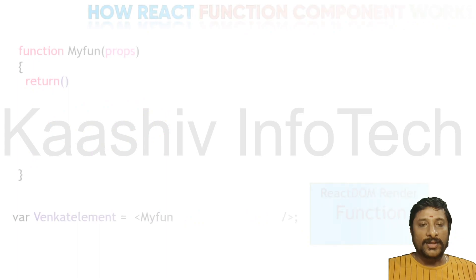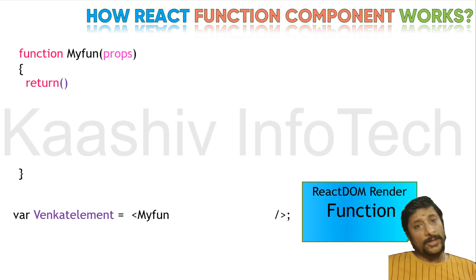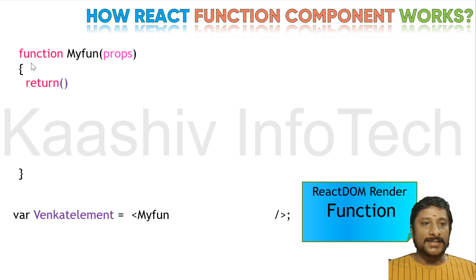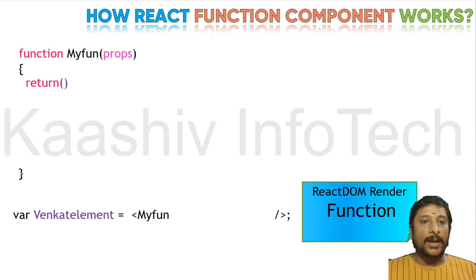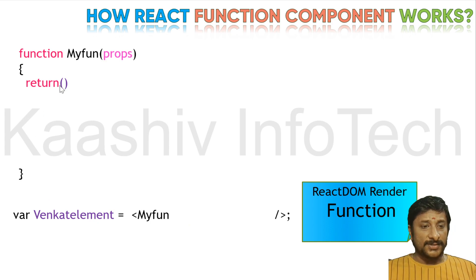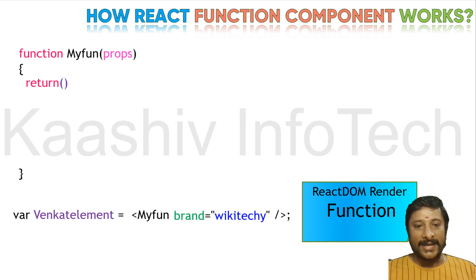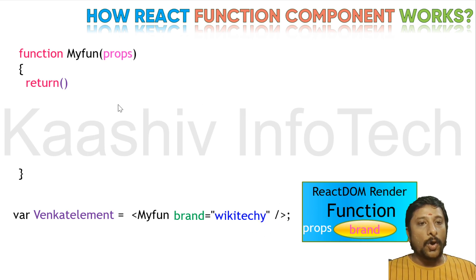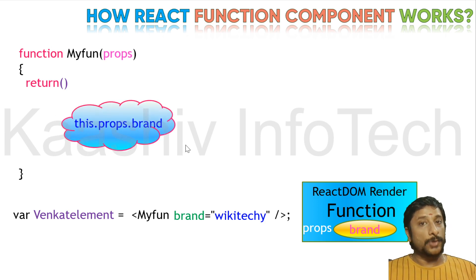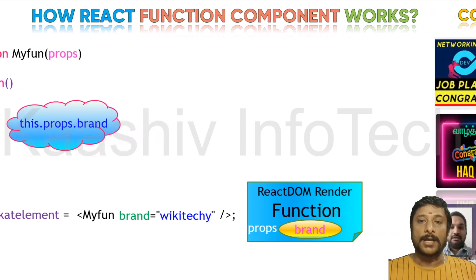You may ask: how about functions? In classes we need to render, but in functions we have a return statement. In the function, you pass props as a parameter — unlike classes where no parameter is needed and you access directly with this.props. The props object will have the property value. You can see here: brand equal to 'wikidiki'. The function will receive props.brand. In a function you can directly use props.brand — no need for 'this'. This is how function props work.